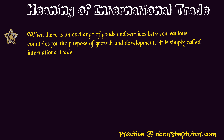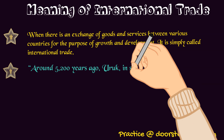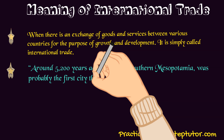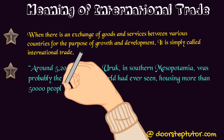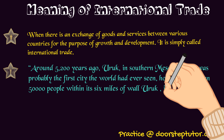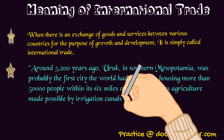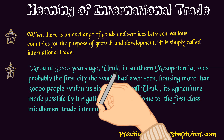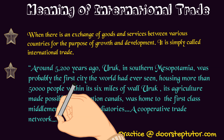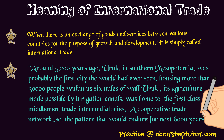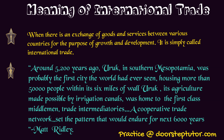According to Matt Ridley, one of the eminent writers and journalists of UK, around 5200 years ago in Uruk city in southern Mesopotamia — which he considers probably the first city in the world, housing more than 50,000 people within its six miles of wall — its agriculture made possible by irrigation canals was home to the first class of middlemen and trade intermediaries. A cooperative trade network set the pattern that would endure for 6000 years, showing that a proper trade network existed even 5200 years ago.